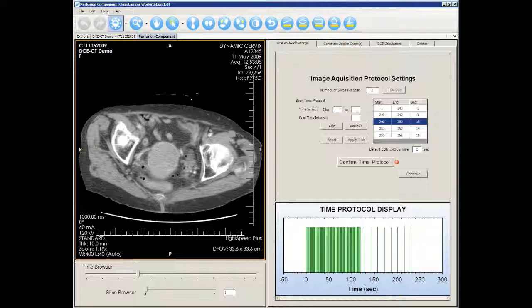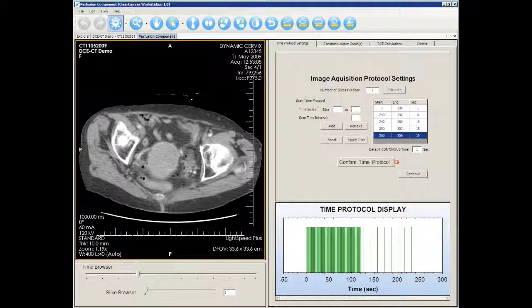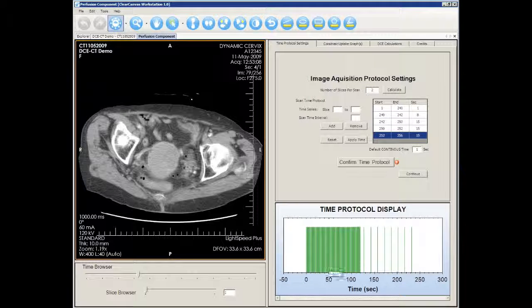Similarly, slices 250 to 252 are acquired at a 15 second interval. Your time protocol is also displayed in a graph here.